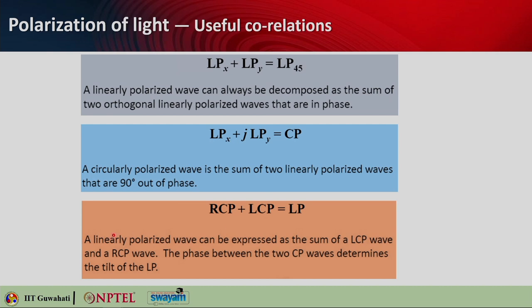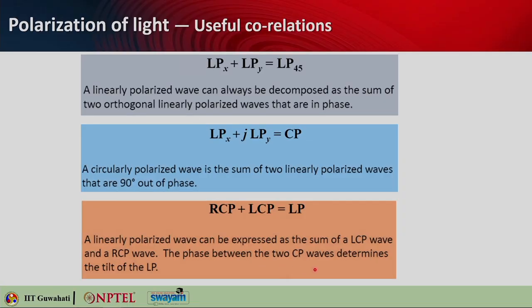Adding left circularly polarized light and right circularly polarized light gives linear polarization. A linearly polarized wave can be expressed as the sum of an LCP wave and an RCP wave. The phase difference between the two circularly polarized waves decides the tilt of the linear polarization — if they are in phase you get 0-degree linear polarization; if they are 90 degrees out of phase you get 90-degree polarization. The phase between the two circular polarized waves determines the tilt of the linear polarization.